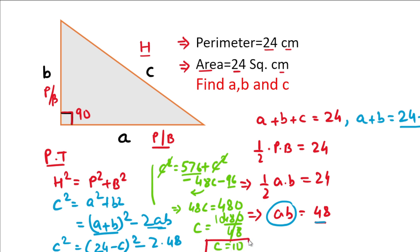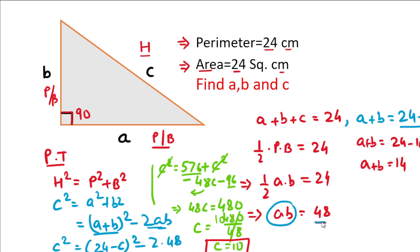Now substituting c equals 10 back into the perimeter equation: a plus b equals 24 minus 10, so a plus b equals 14. And we already know that ab equals 48.